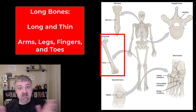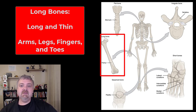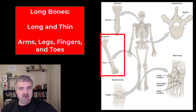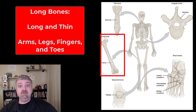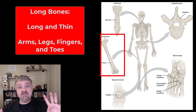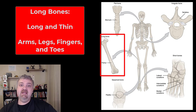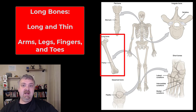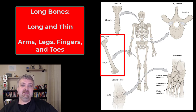Let's start with long bones. Long bones are going to be long and thin. These are going to be the bones of your arms and legs, your upper and lower extremities, except for your carpal bones in your wrist and the tarsal bones in your ankles. So your humerus, radius, ulna, metacarpals and phalanges in your arms, and femur, tibia, fibula, metatarsals and phalanges in your lower extremities are going to be long bones.